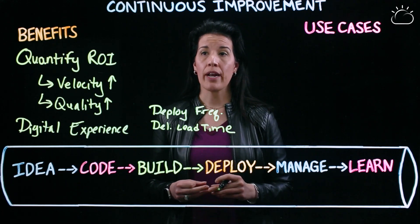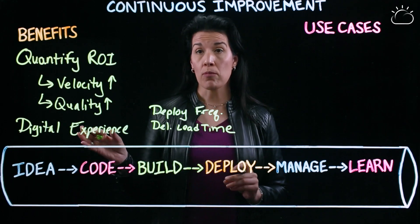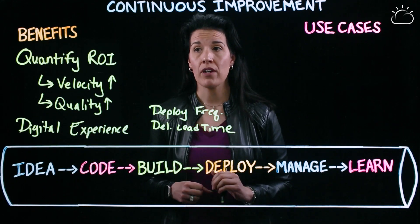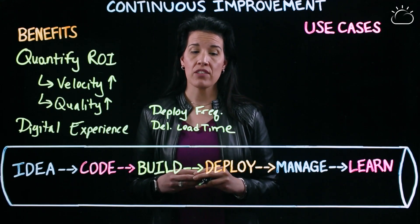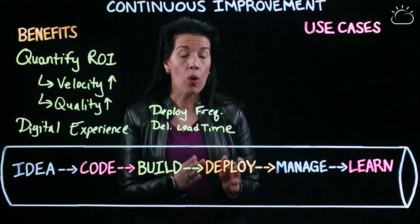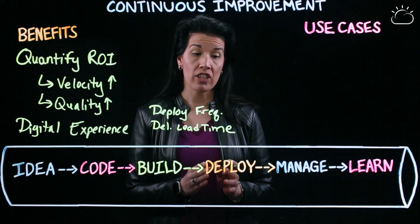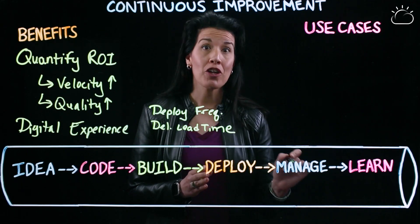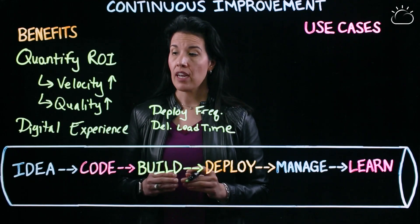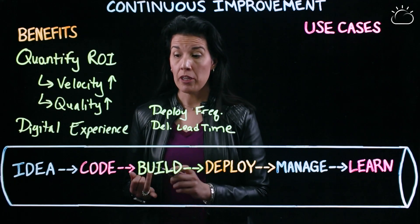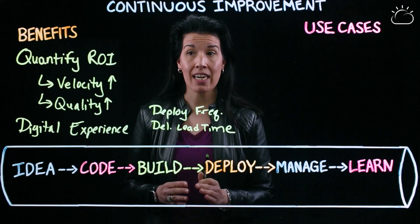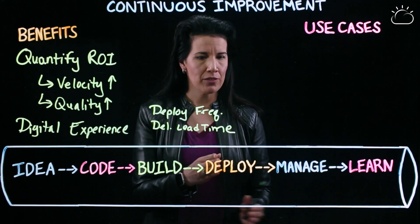There are also KPIs around change volume, which measure the number of story points that are actually packaged into releases that make it to production. We can also define success around mean time to recovery — how long it takes, once a defect is found in production, to figure out that you've got a defect and then pipe it back into the software delivery lifecycle so that a fix can be coded and deployed back into production. This is mean time to recovery: deploy to deploy.